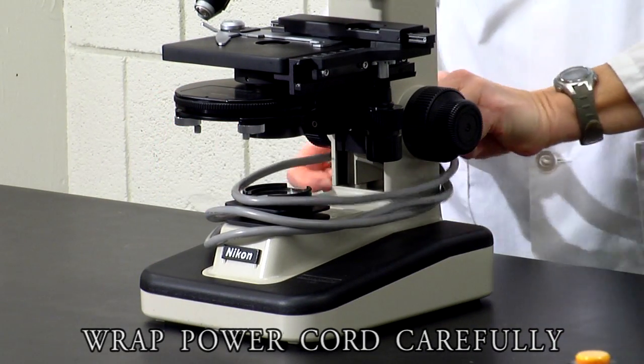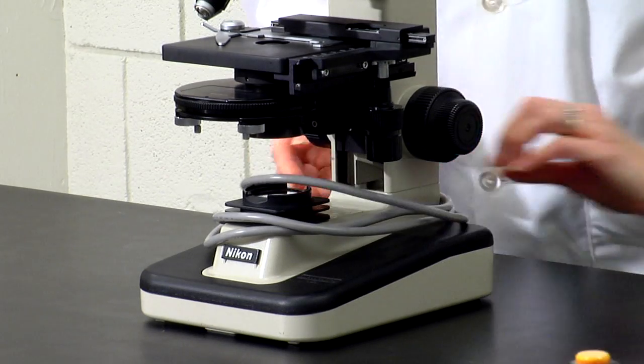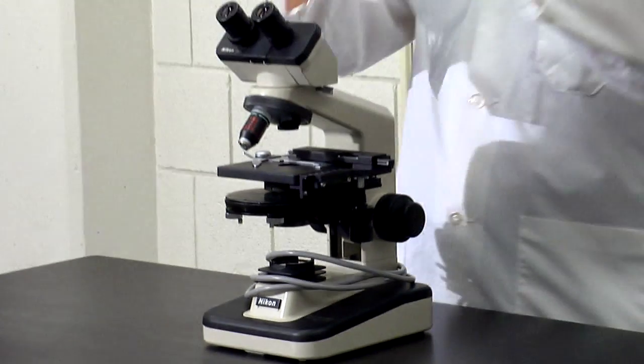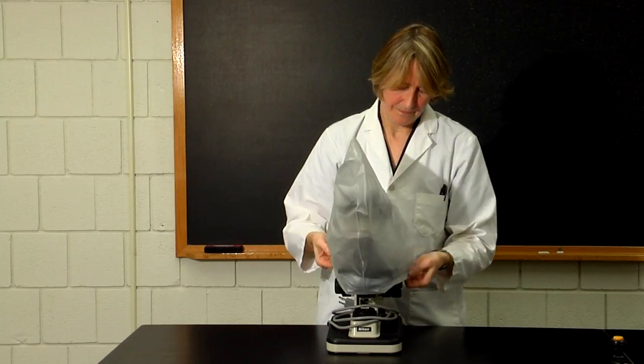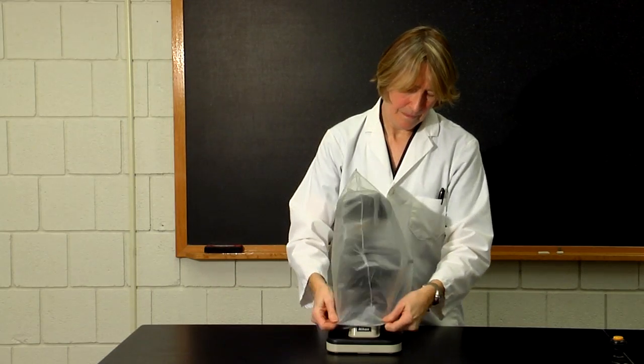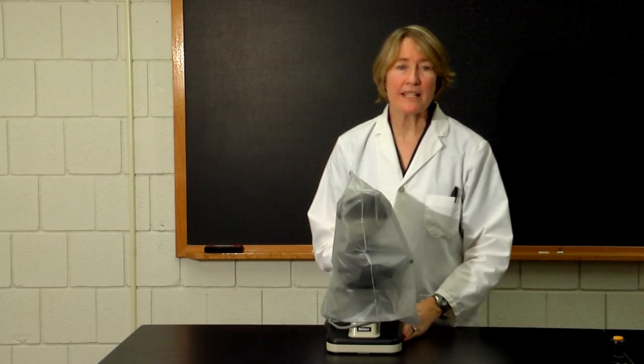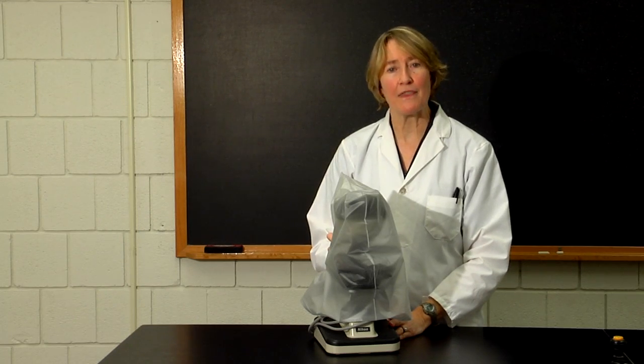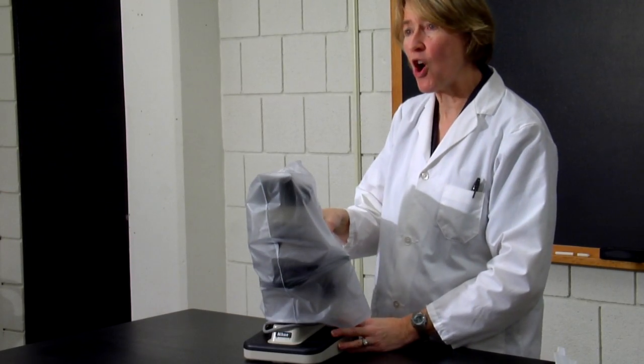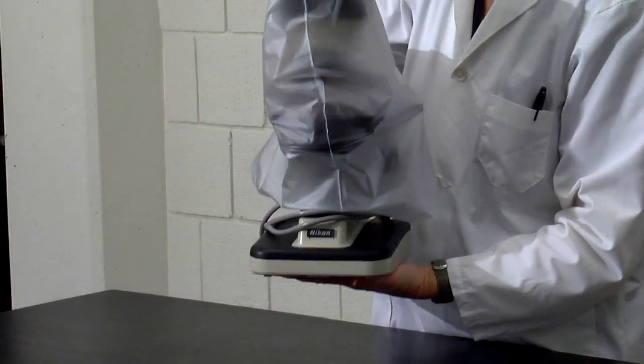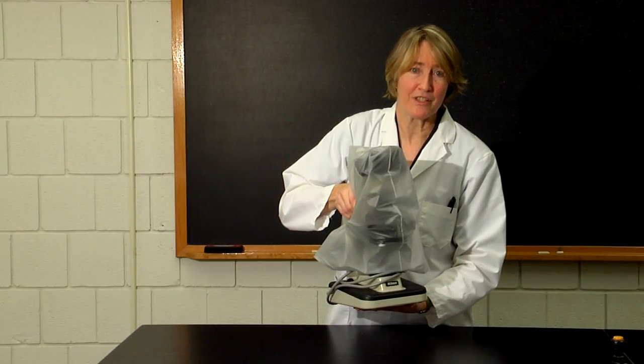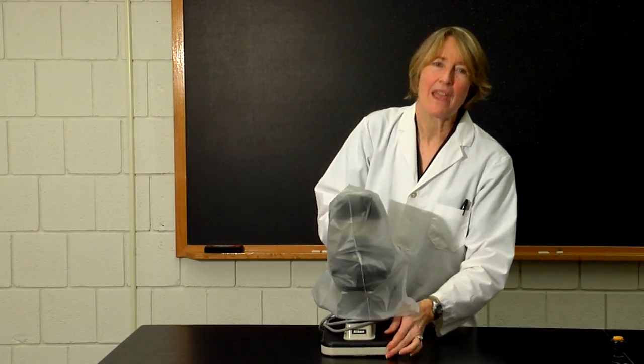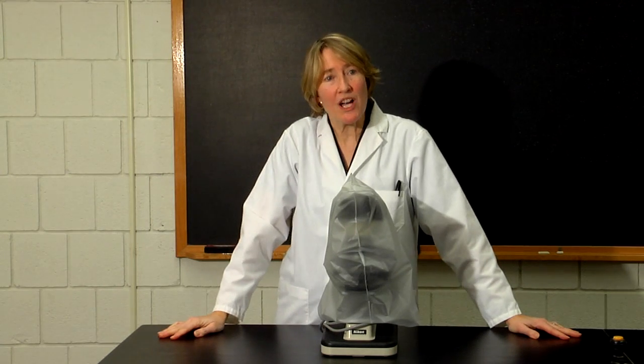Wrap the cord around just the way you found it. Replace the dust cover. And again, replace the microscope either in the cabinet by your bench or in the cabinet at the back of the room. Again, grasping the arm with one hand and another hand beneath the base of the microscope. And thanks very much for watching. We'll see you in lab.